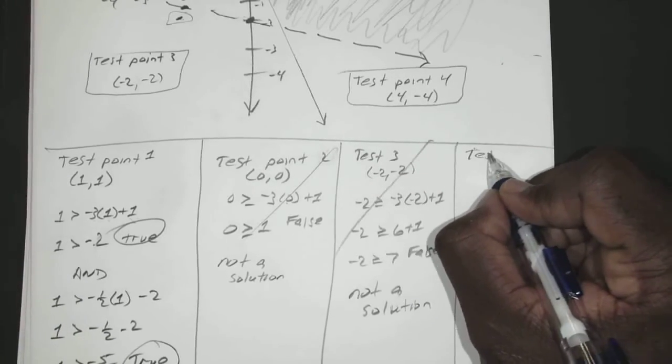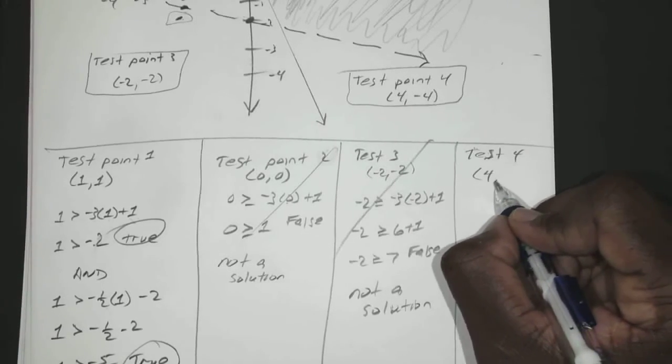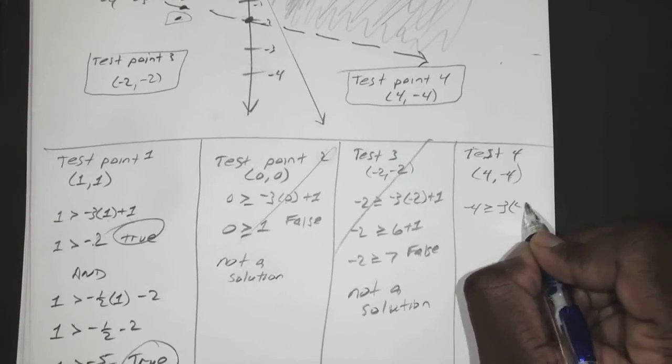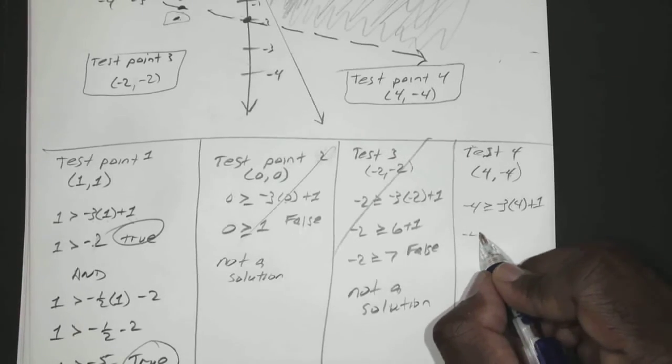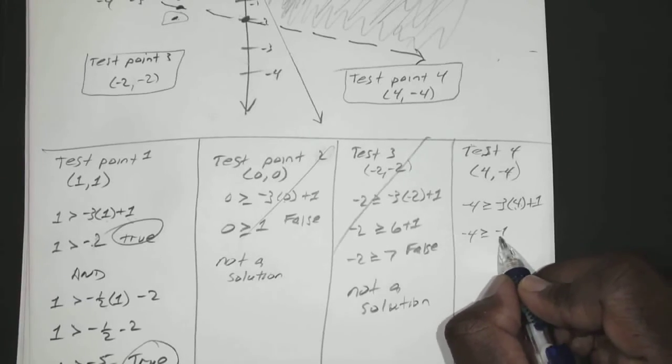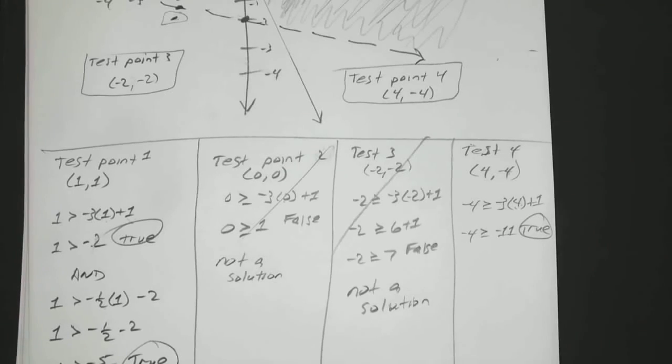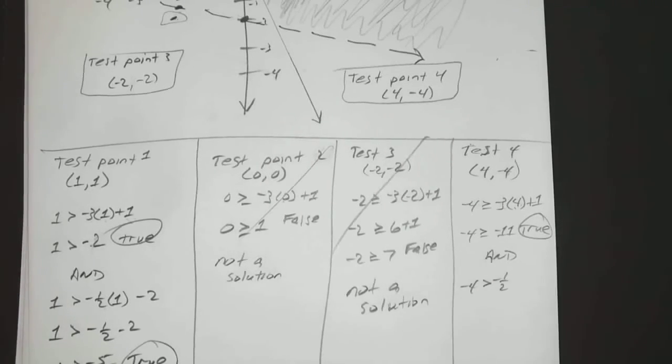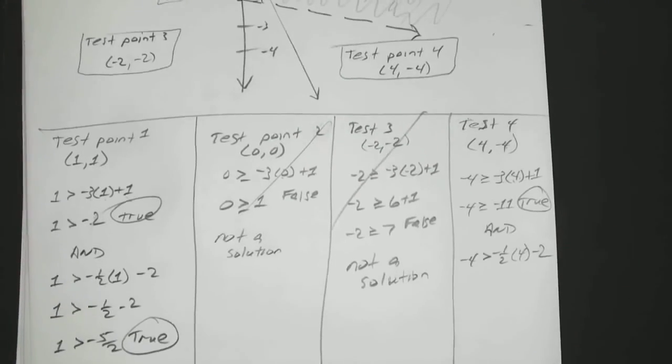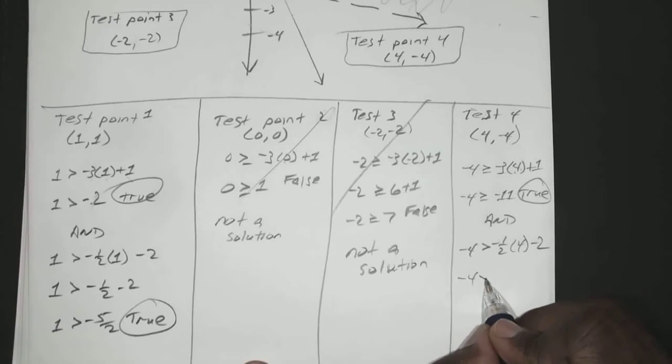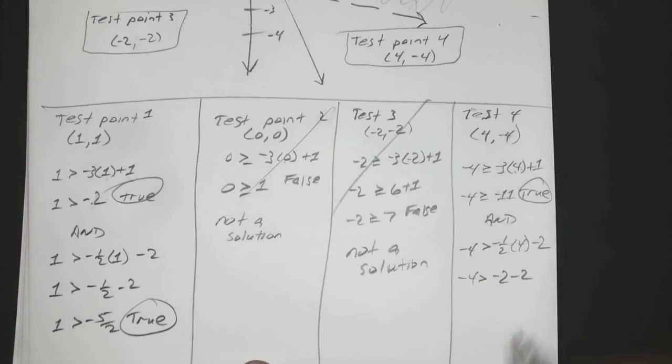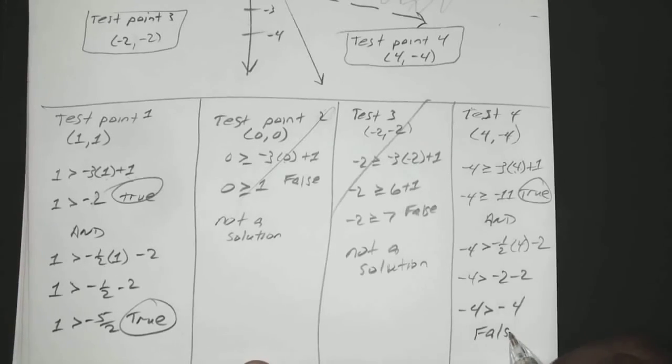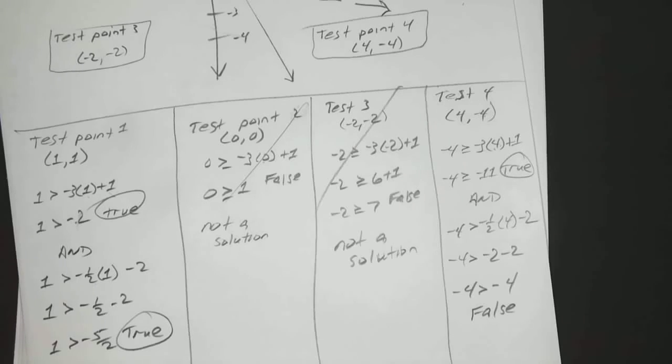Okay? And if you try test 4, which is 4 negative 4, so if y is equal to negative 4, that's negative 4, is greater than or equal to negative 3 times 4 plus 1. So negative 4 is greater than or equal to negative 12 plus 1, which is negative 11. So that's true. Now we do the next one. Negative 4 is greater than negative 1 half times 4 minus 2. Oh, bring that up a little bit. So that means negative 4 is greater than negative 2 plus 2 or negative 2 minus 2. Or negative 4 is greater than negative 4, which in this case is false because it's equal to negative 4, just not greater than. So we know it's not a solution.